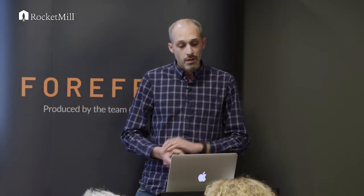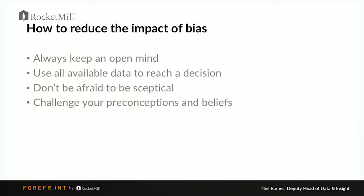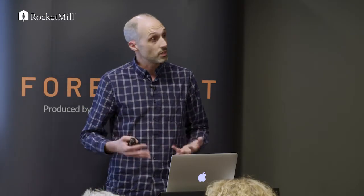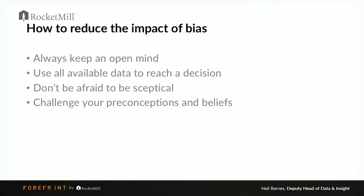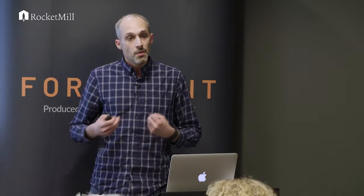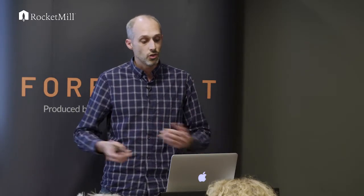Bringing this all together to answer the question: how do we reduce the impact of bias in our data analysis? I believe four core principles should be adopted at all times. First and foremost, always keep an open mind — I believe it underpins each of the three cognitive biases discussed today. To reduce the anchoring effect, use all available data to reach a decision. Think broadly about the metrics you're using, how they interlink, and use that to make a strong and robust decision.